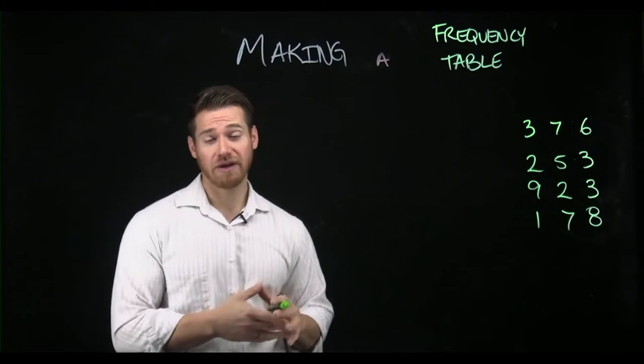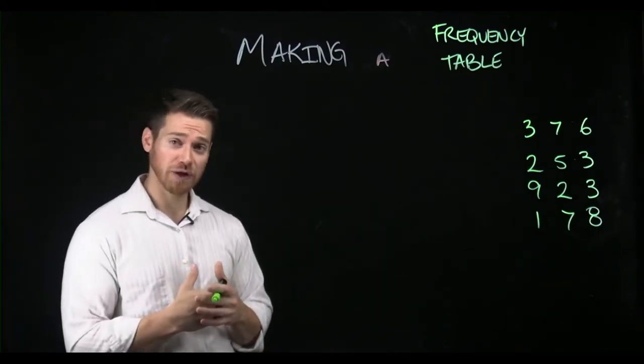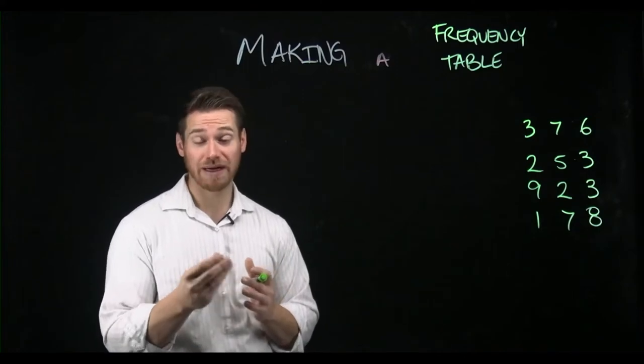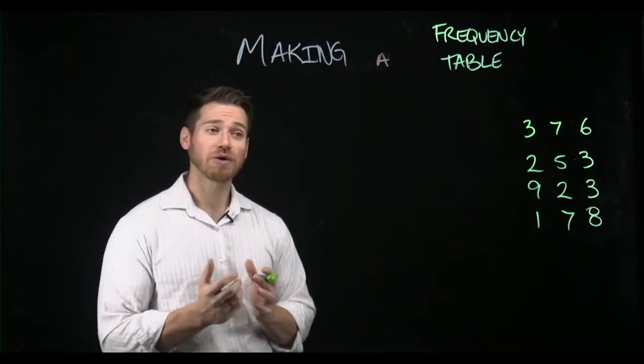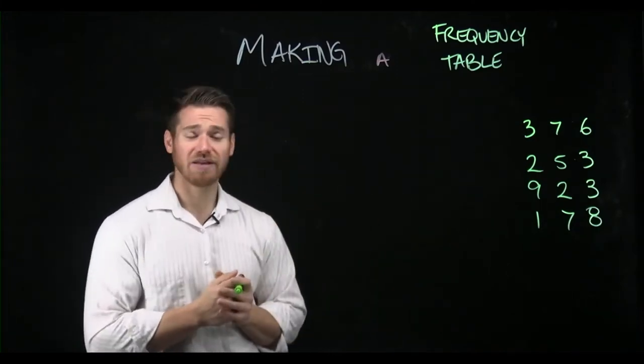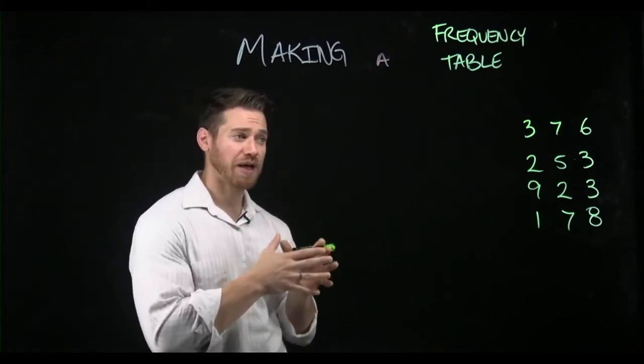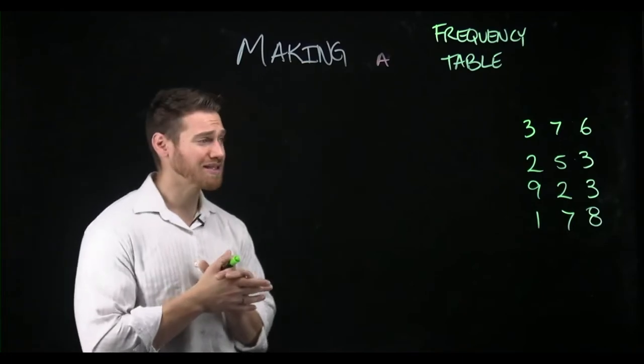Remember the point of making a frequency table is to quickly summarize the information in a way that is organized and easy to interpret. We're trying to get across information containing those values to somebody in a quick and efficient way, so we need to think about how do we represent that data in our table.